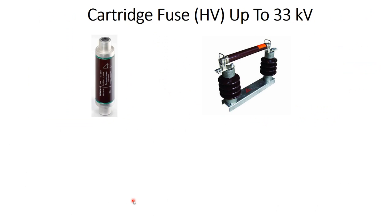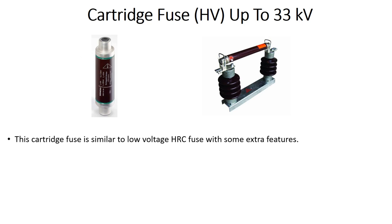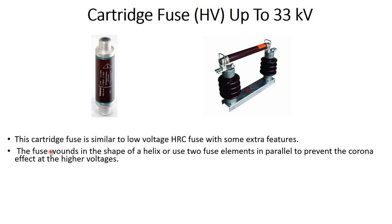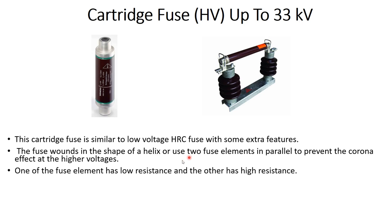For high voltage fuses there is another cartridge type which works on the same principle but has extra features. The fuse inside is wound in the form of a helix, and it has two fuse elements connected in parallel, in order to prevent the corona effect at higher voltages.